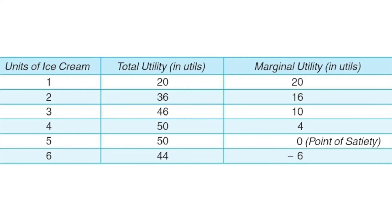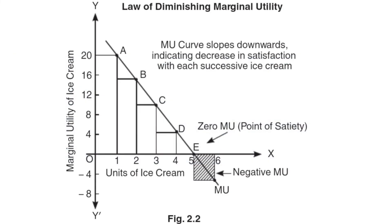Now let us see the marginal utility values assigned to the momos in a table. For the first unit she assigned 20 utils, then 16, then 10, then 4, then 0, and then minus 6. From this table, you can easily see that as consumption increases, the marginal utility is continuously declining. Now let us also see this on a graph.